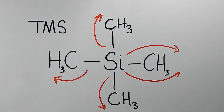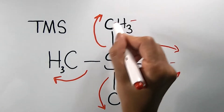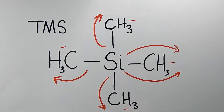It's one tall peak because all of these hydrogens are equivalent to each other due to the symmetry in this molecule. So all 12 hydrogens register in one tall peak at 0 ppm.